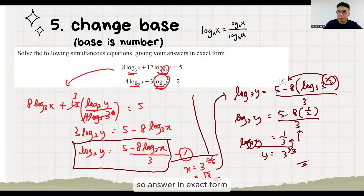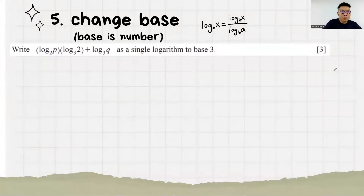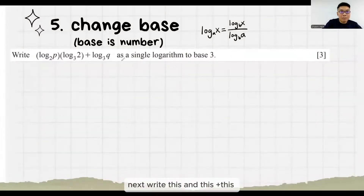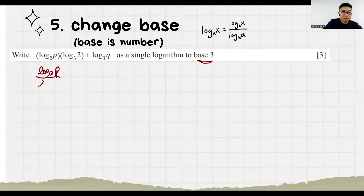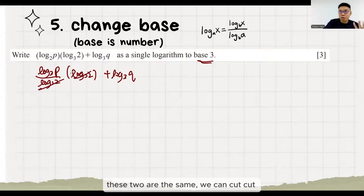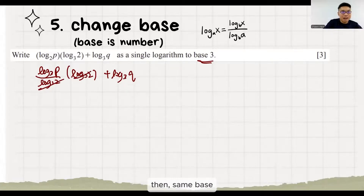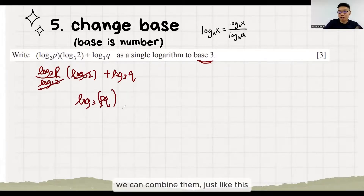Next, write this and this plus this as a single log base 3. Everything change to log base 3. These 2 are the same, then we can cut, cut. Then same base — we can combine them just like this.